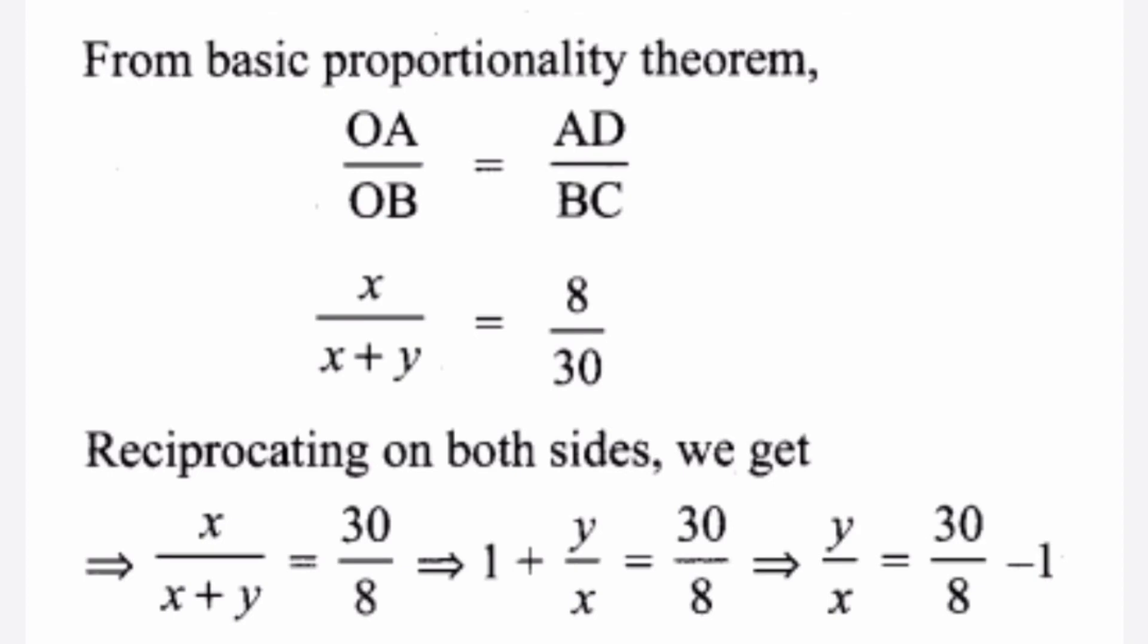Reciprocating on both sides, we get x plus y by x is equal to 30 by 8. That implies 1 plus y by x is equal to 30 by 8. That implies y by x is equal to 30 by 8 minus 1.